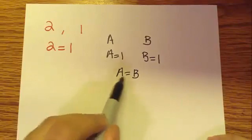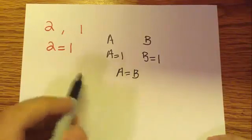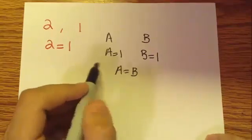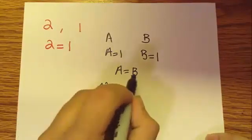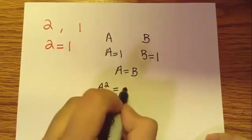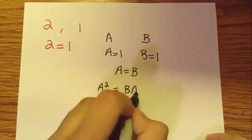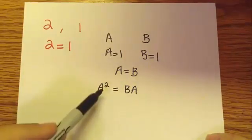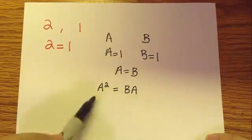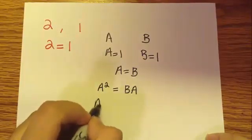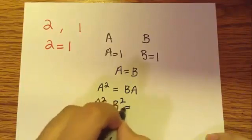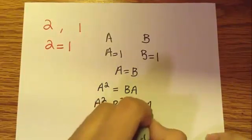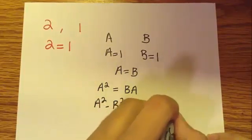Now I'm going to multiply both sides by A. So A times A is going to be A squared. So I'm going to have A squared equals B times A, which is just going to be BA. Now I'm going to subtract B squared from both sides. So I'm going to have A squared minus B squared equals BA minus B squared.